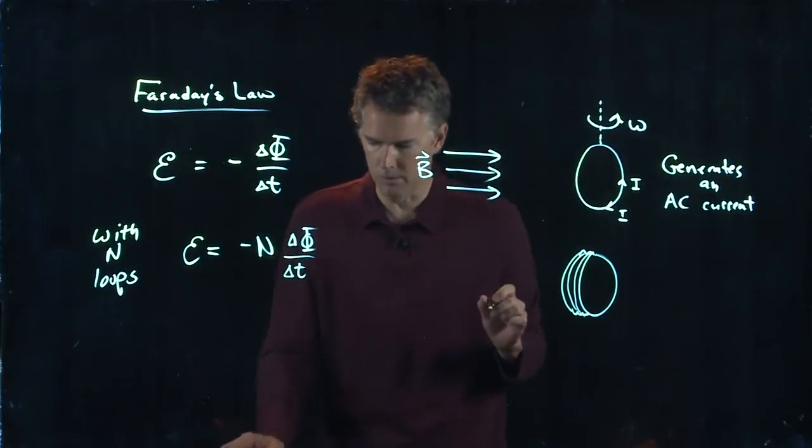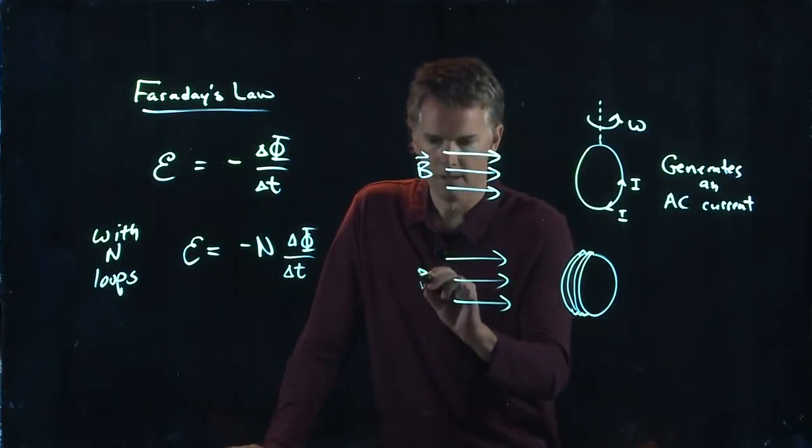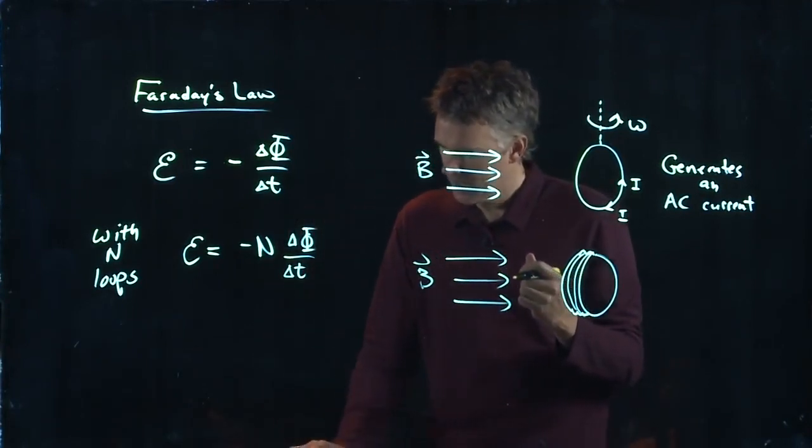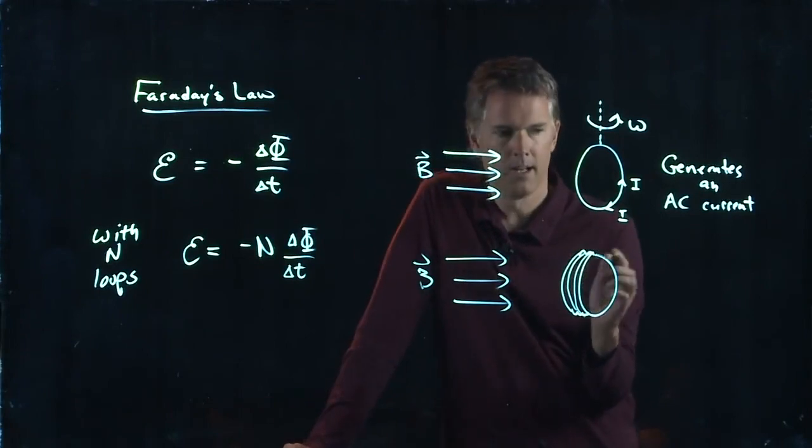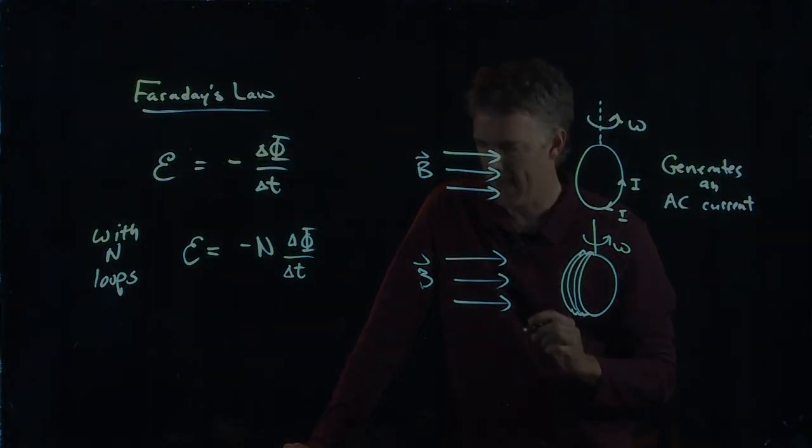There's a whole stack of coils, and now as it rotates in this B field, it's going to generate an AC current. And we know it's going to generate it sinusoidally because it's rotating around at Omega.